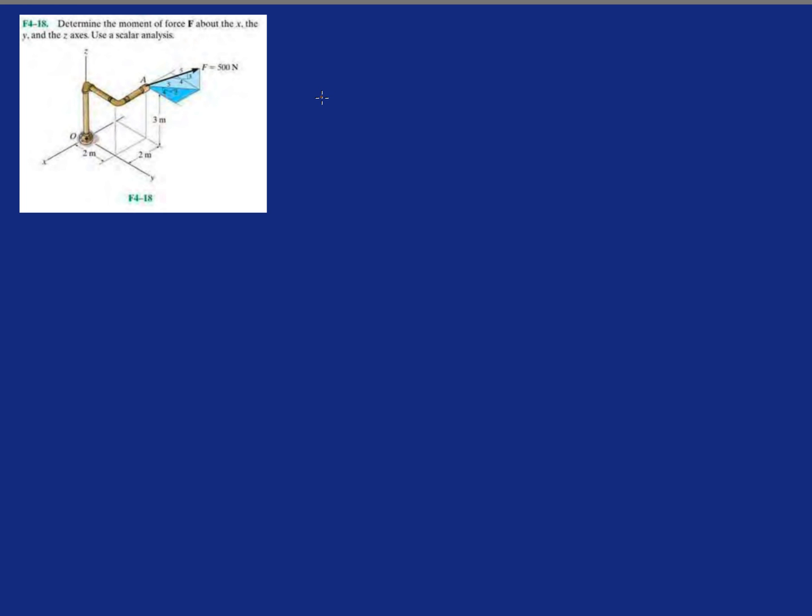So first thing we'll do is we have this force of 500 Newtons. First thing we want to do is break it down into two components. This component we'll call it FXY because it's on this deep blue plane which is the XY plane. It's not necessarily in the X or the Y and it's got this component which we actually know, which is going to be FZ.